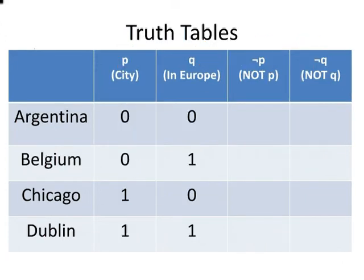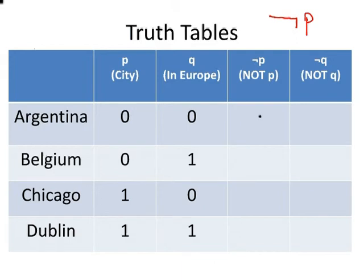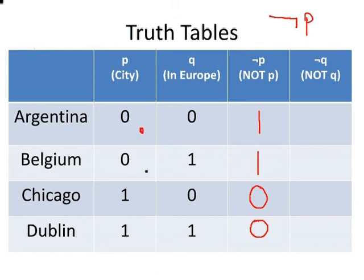Before I go, I'm going to look at the negation symbol — Not P and Not Q. This little symbol here represents negation. Not P means not a city. For Argentina, the fact that it's not a city is true — so that's one. Belgium, not a city — that's one. Chicago is a city, so we're interested in places not being cities — that's zero. And Dublin is a city — zero. Note that this column is the exact opposite of the P column: if you have a zero there, there's a one here, and vice versa.